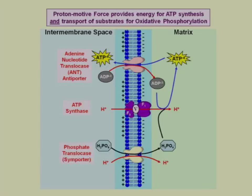Once we have an electrochemical gradient, the protons move through ATP synthase. However, some protons are allowed to go through a phosphate translocase importer, which pulls phosphate groups into the mitochondrial matrix. As ADP comes in, it's combined using ATP synthase with this phosphate group to create ATP. That ATP is then transported out. This is an antiporter because ADP comes in as ATP goes out.